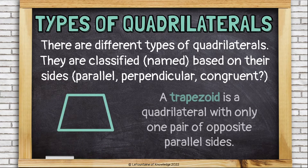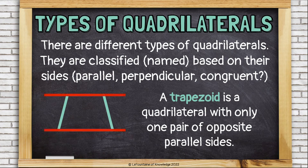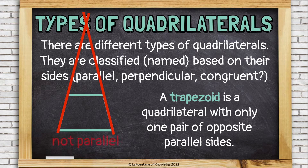This is a trapezoid. A trapezoid is a quadrilateral with only one pair of opposite parallel sides. The top and bottom of this trapezoid are parallel — if we were to extend those lines out, they would run side by side forever and never cross. But the other set of opposite sides is not parallel.